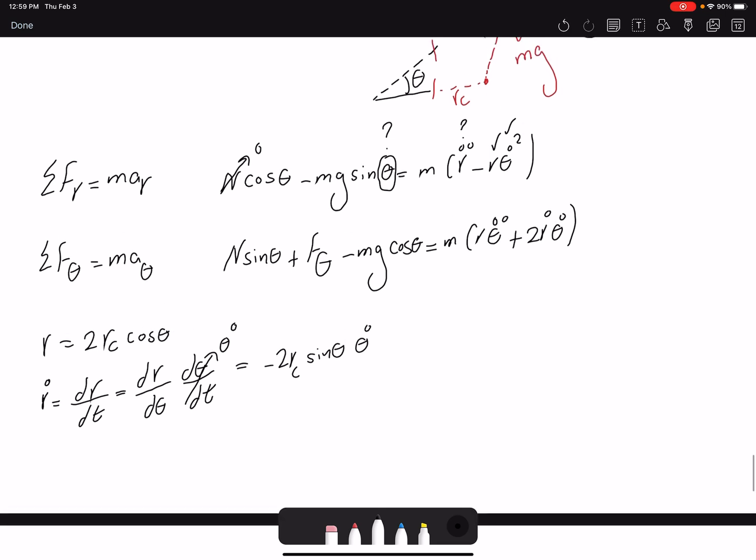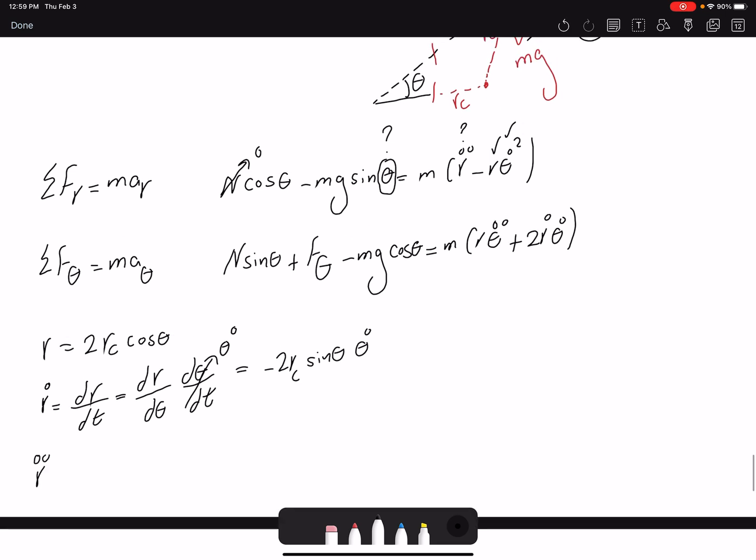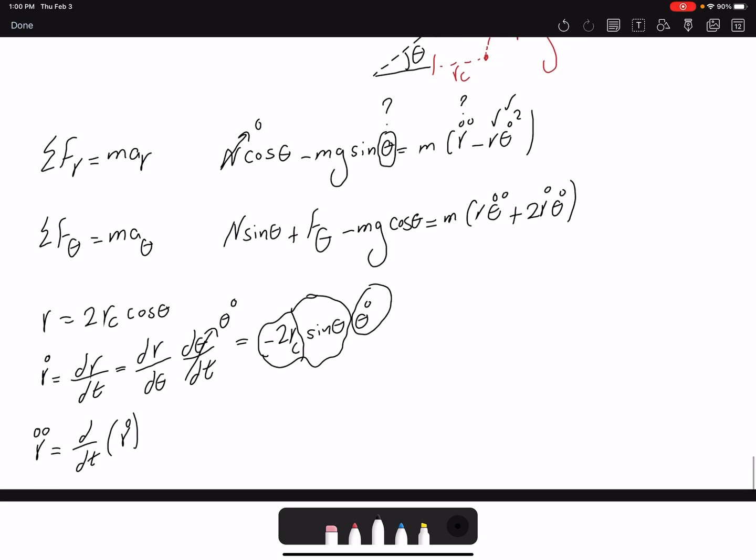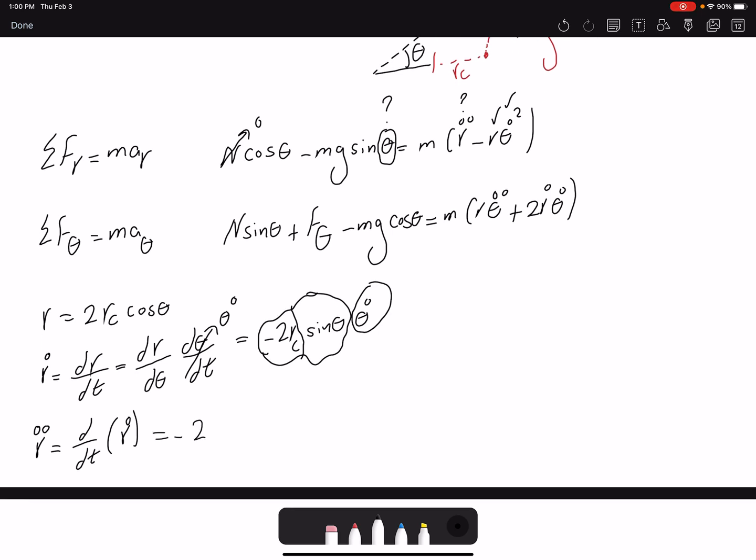Now I have to take another derivative to find R double dot. So D over dt of my R dot. I have two components. One is theta dot. The derivative with respect to time would be just simply theta double dot. And also the derivative of sine theta. 2Rc would be just the constant value. So I have negative 2Rc.